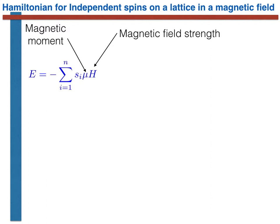What we are really doing is operating in an NHT ensemble in which the magnetic field strength is fixed and plays the role of the volume. Most physicists would call this a canonical ensemble, even though the volume is not fixed.